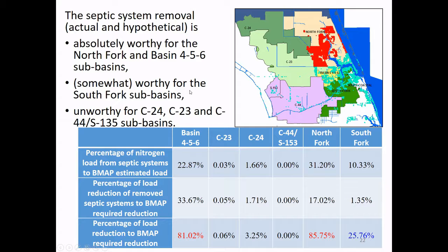After calibration, we also extrapolated our modeling to a larger area by applying it to basins — Basin 4, Basin 5, Basin 6, Basin C-23, and Basin C-24. Those are actually canal numbers, as this area is heavily controlled by drainage canals.